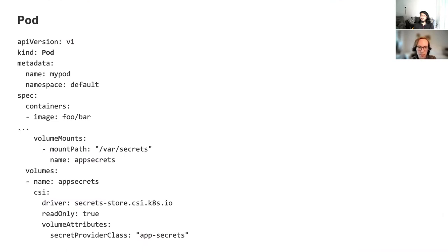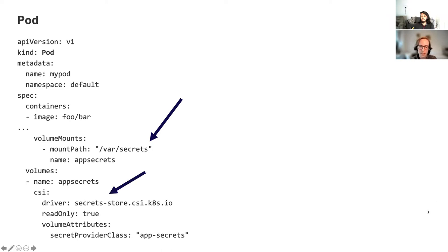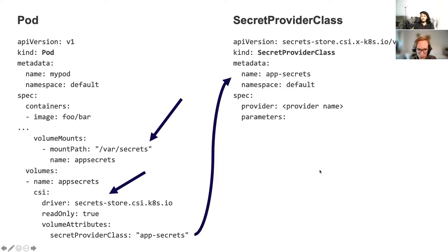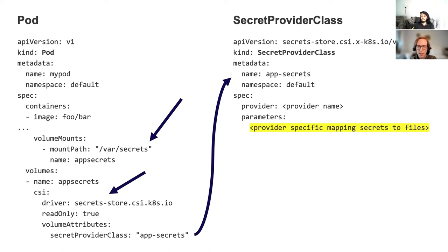So let's dig into some YAML. Here's an example pod. This pod mounts a volume at /var/secrets. This volume is a CSI volume instead of a secrets volume. The driver name in the CSI volume tells the kubelet to use the secret store driver for this volume. The volume also references a secret provider class called app-secrets. The secret provider class is a namespaced Kubernetes custom resource that is used to provide the driver configurations and provider-specific parameters to the Secret Store CSI driver.